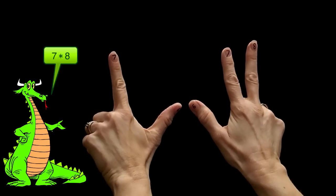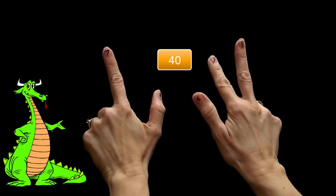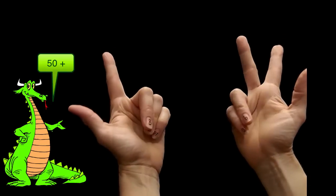The fingers that are still up I count by tens. So that is 10, 20, 30, 40, 50. I have 5 fingers up so it's 50.